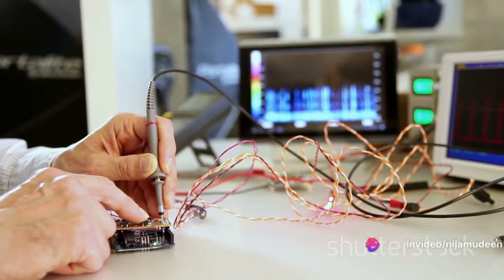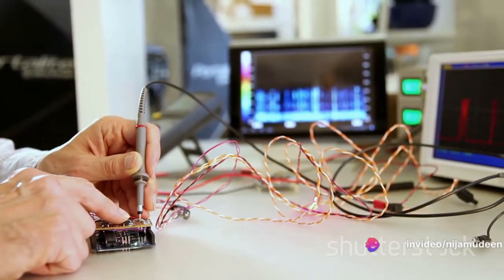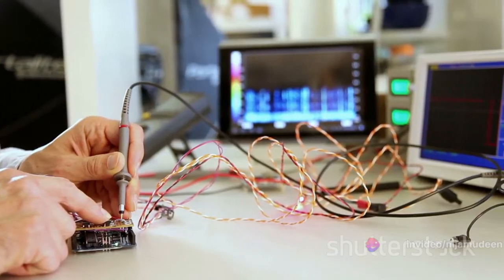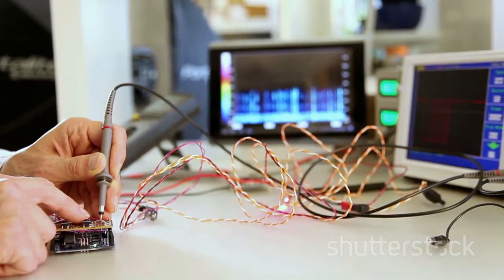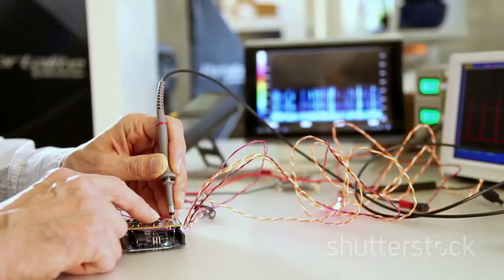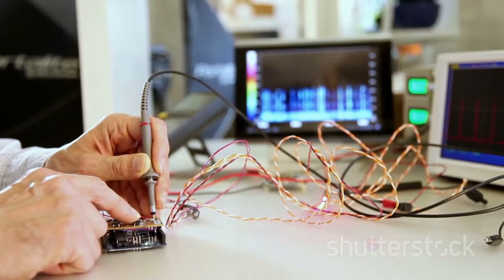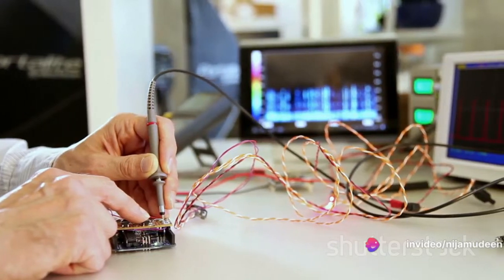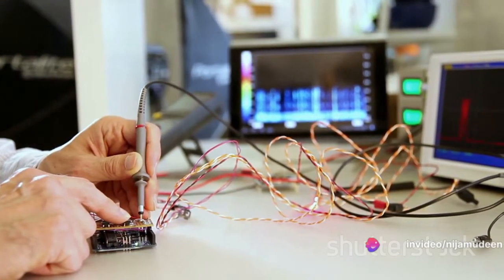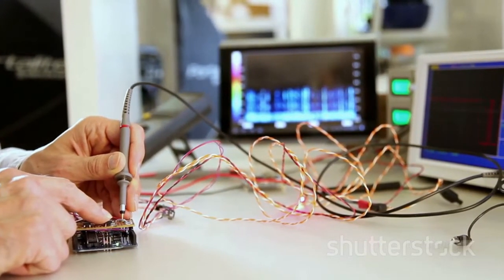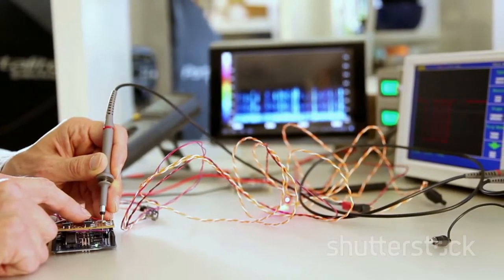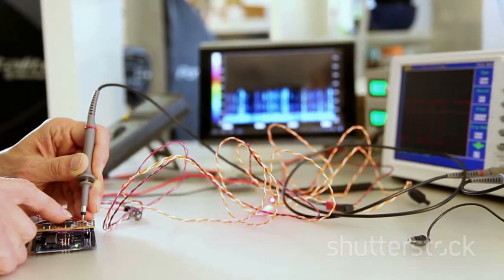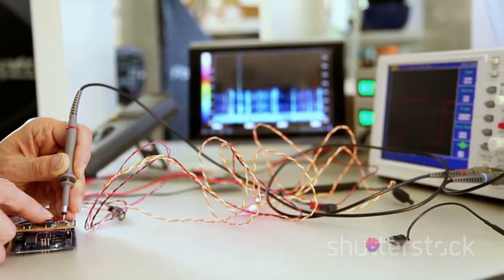This clever setup allows the three-wire RTD to overcome the lead wire resistance issue that plagues the two-wire RTD. But this isn't a perfect solution. For the three-wire setup to work effectively, wires A, B, and C should have identical resistances. This requirement can make the design and implementation of a three-wire RTD a bit more complex, as any variation in the resistance of these wires can throw off the accuracy of the temperature reading.